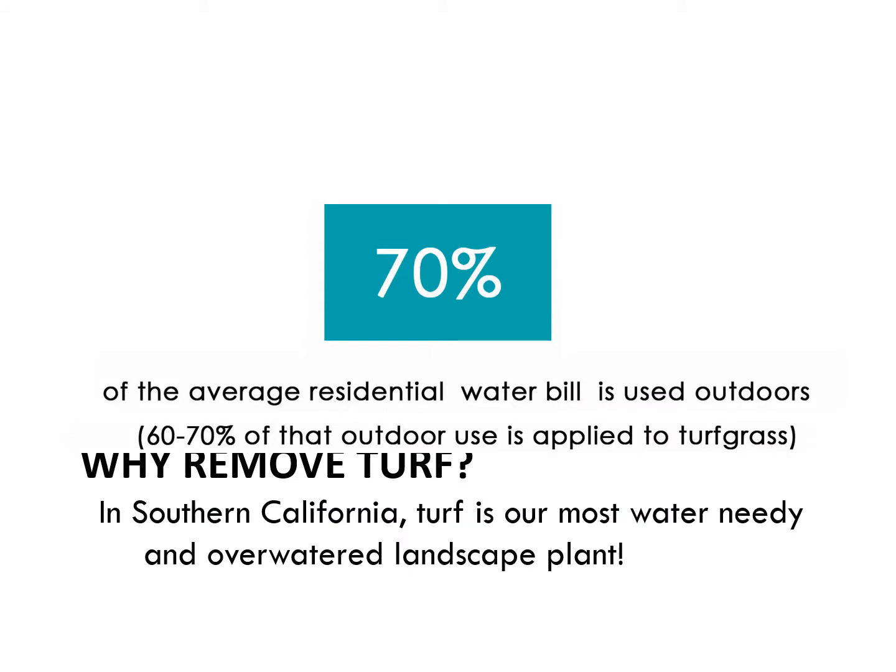When we manage our water use, we find that about 70% of household water is used outdoors, so targeting high water use species like turf or other plants really can create a lot of water savings.